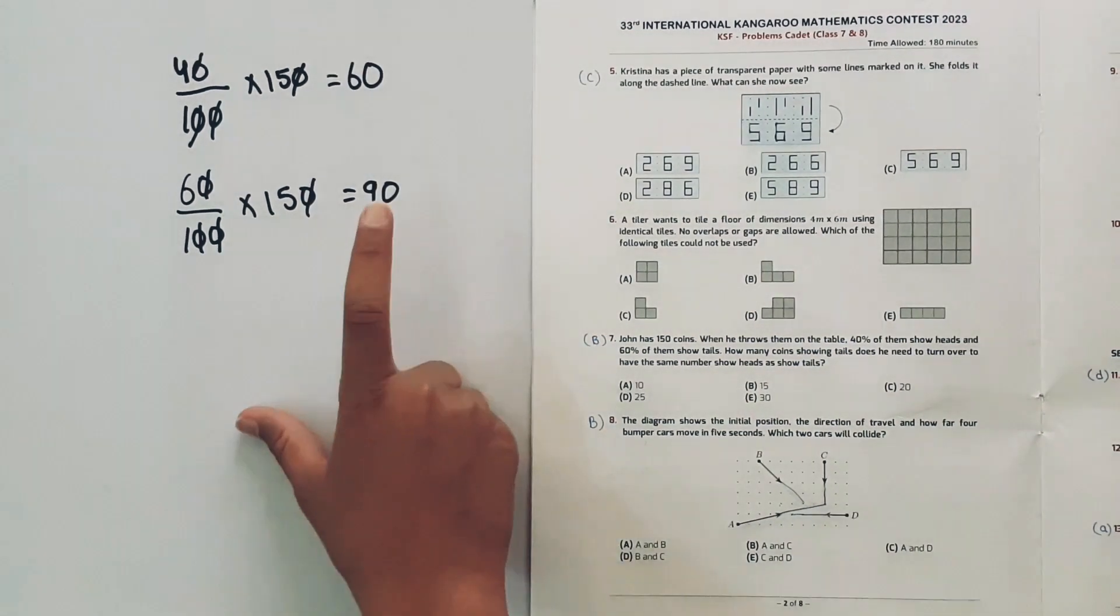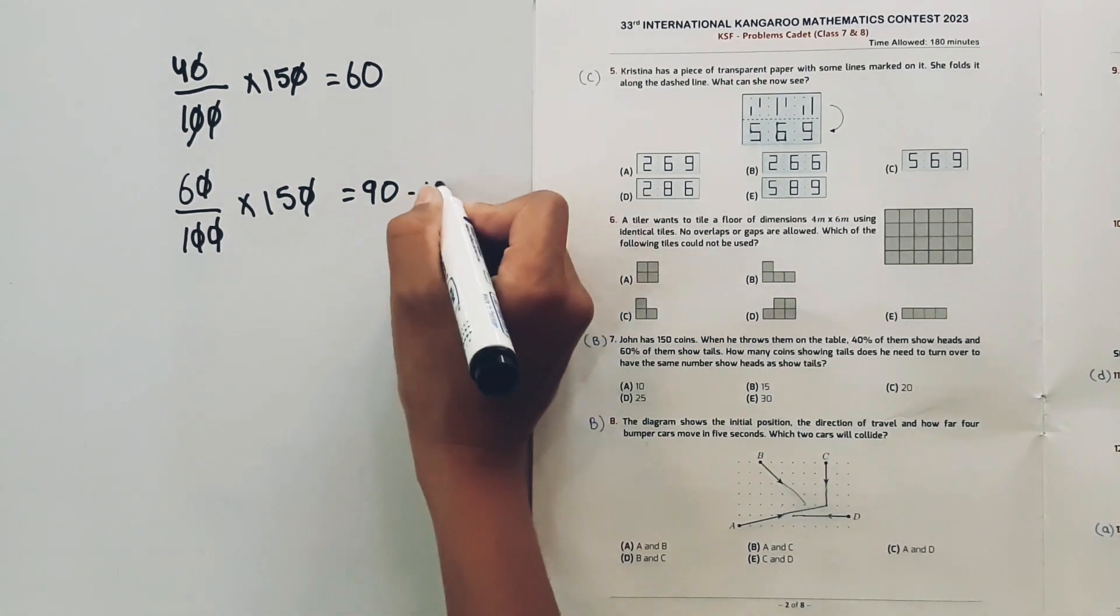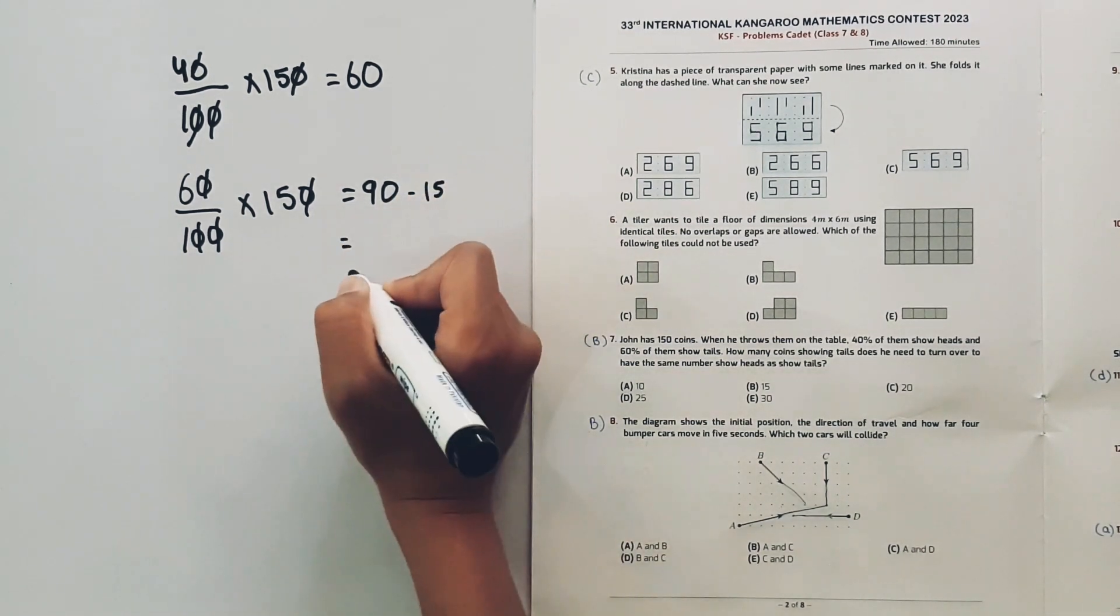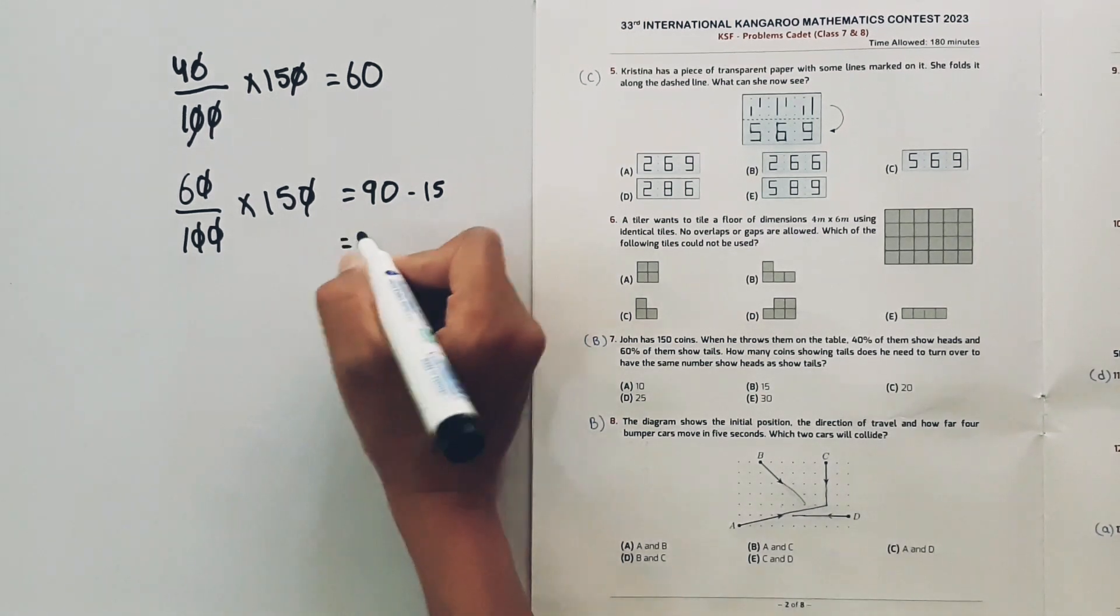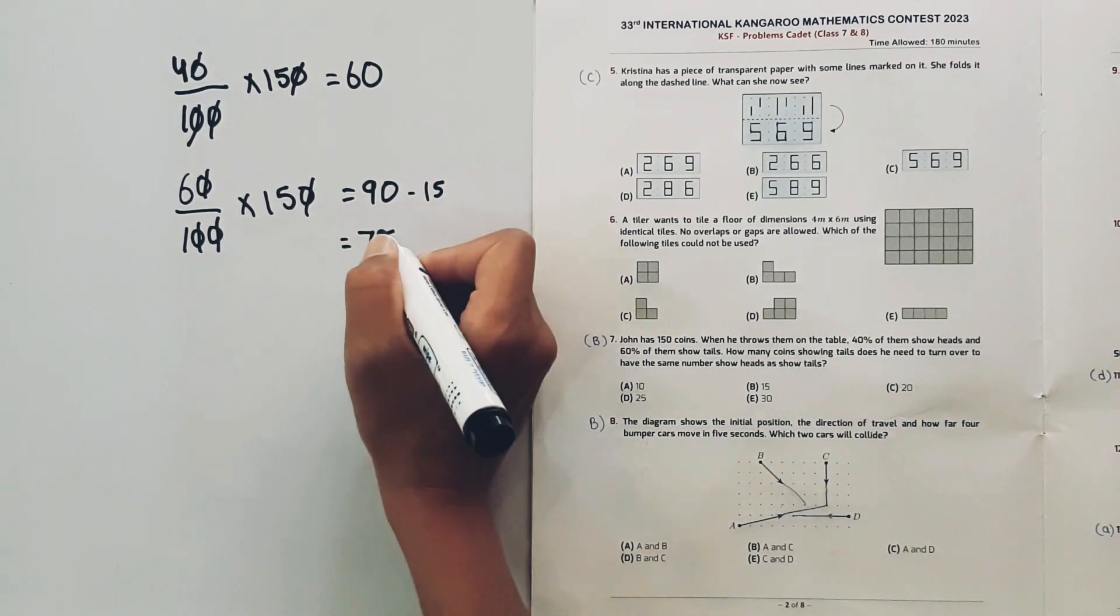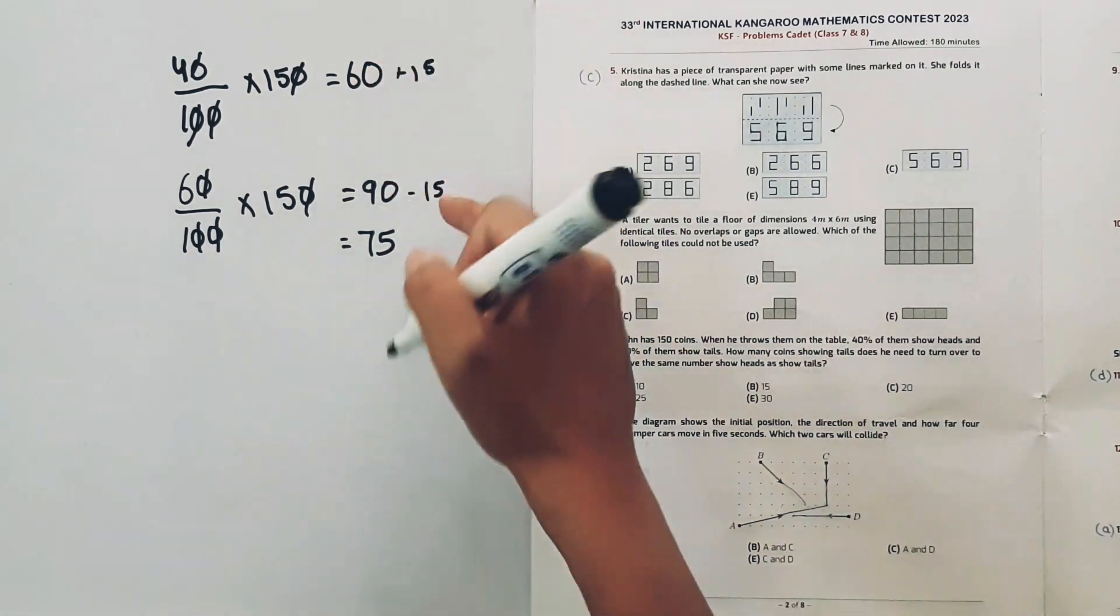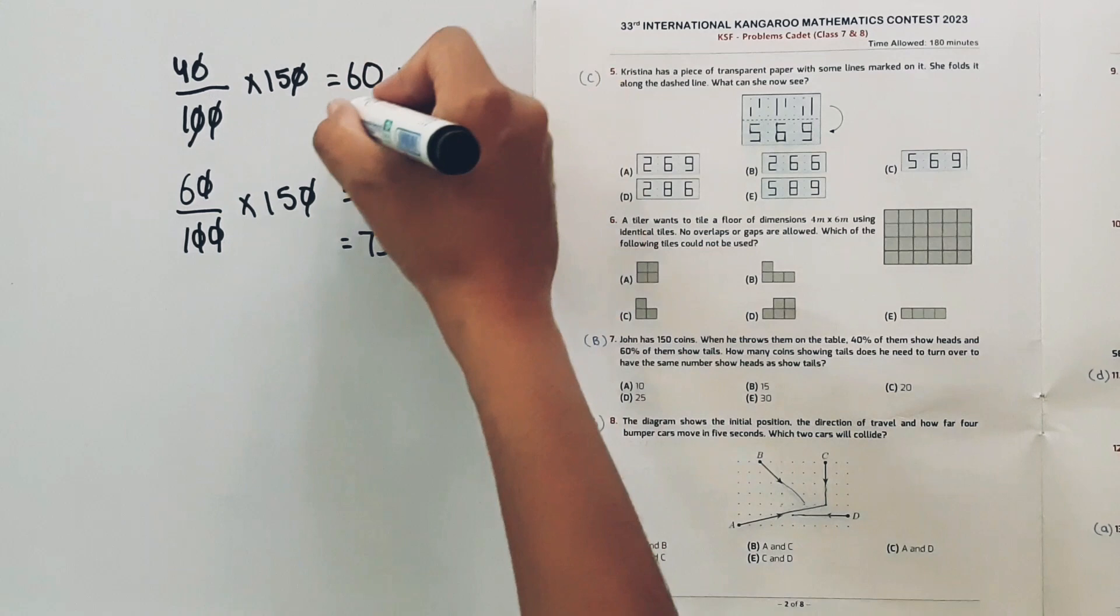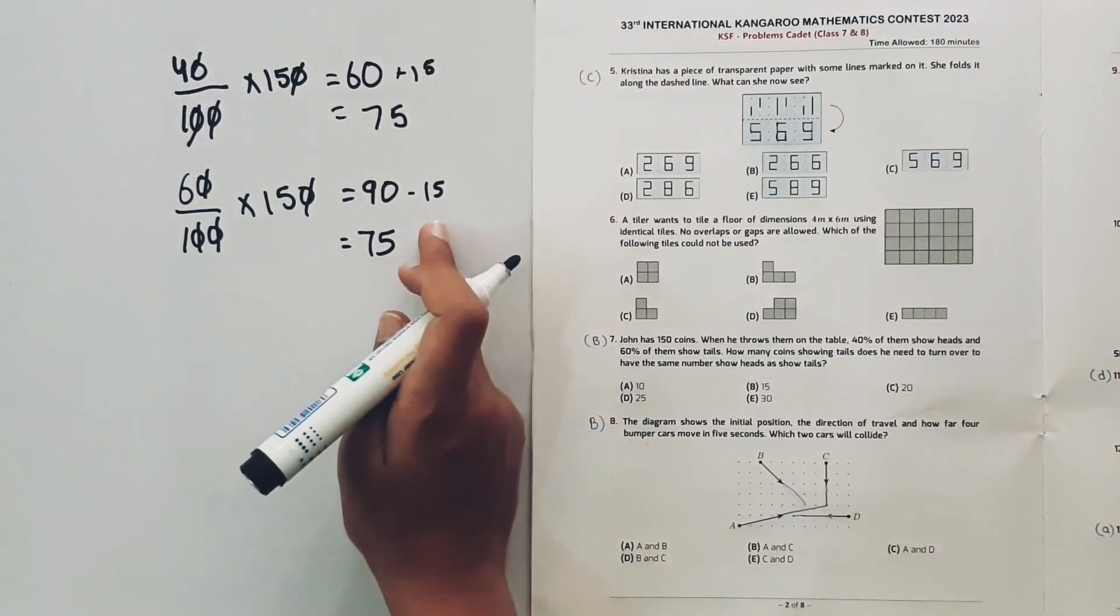If we minus 15 coins from the 90 tails, it will be 75, and if we add these 15 to the 60 heads, it will be 75.